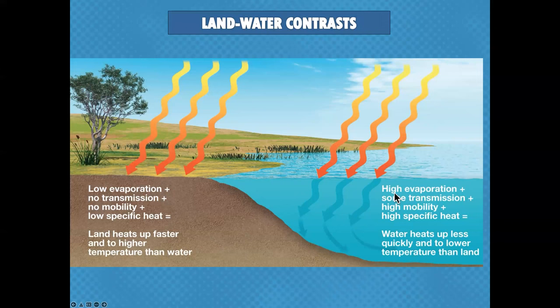Land and water contrast — it gets much colder in central Pennsylvania than at the Jersey Shore because the Jersey Shore is immediately next to the ocean. That distance away from water makes a difference. Water has a high specific heat, meaning it heats up slowly but also cools down slowly — it retains heat longer. Land heats up fast but also cools down fast.